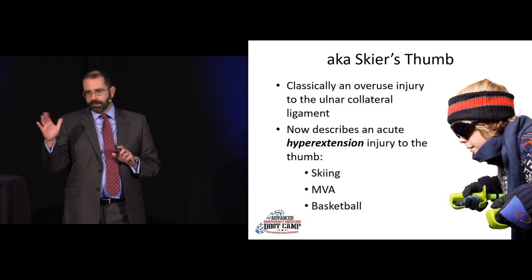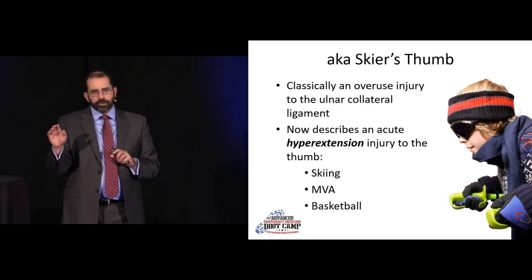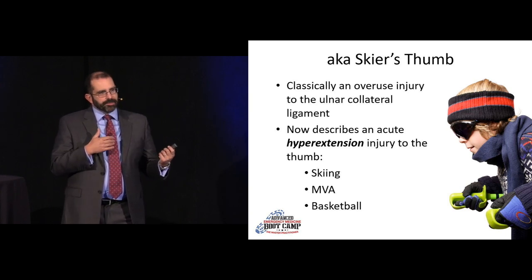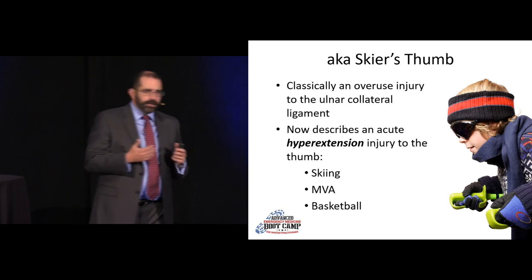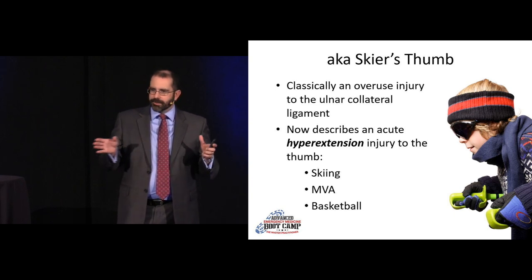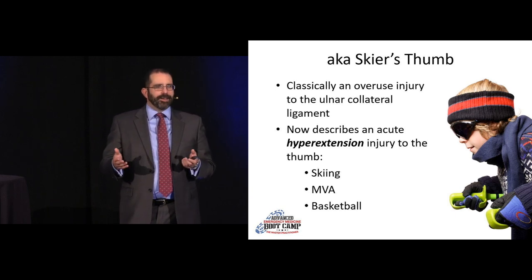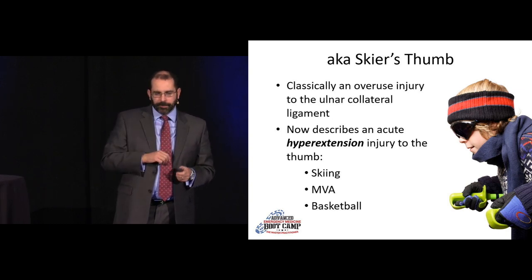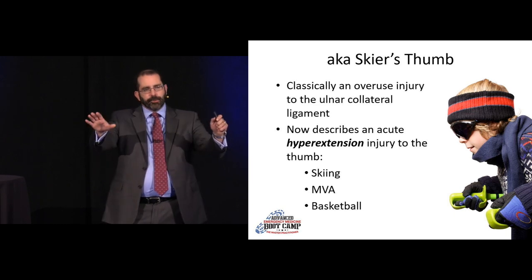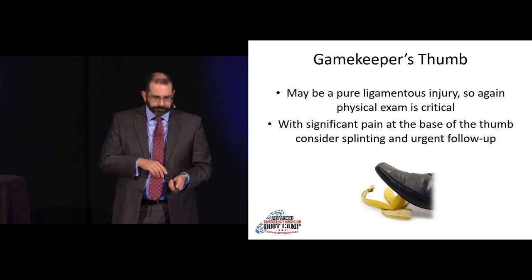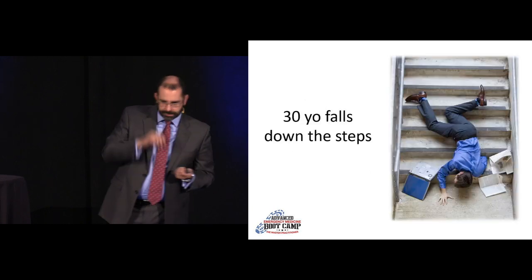With a pure ligamentous injury it comes down to physical exam. If they're tender at the base of the thumb on the ulnar side, put them in a splint — not a typical thumb spica but a more neutral position offloading the ligament — and get prompt orthopedic follow-up. Gamekeeper's thumb is more of a chronic overuse injury; in the acute setting we call it skier's thumb. It's common in skiers — not from the poles hitting the thumb as previously thought, but from high-energy falls. You also see it in MBAs from steering wheel impacts.